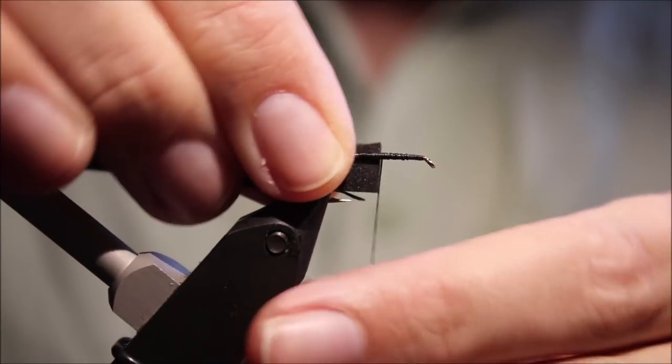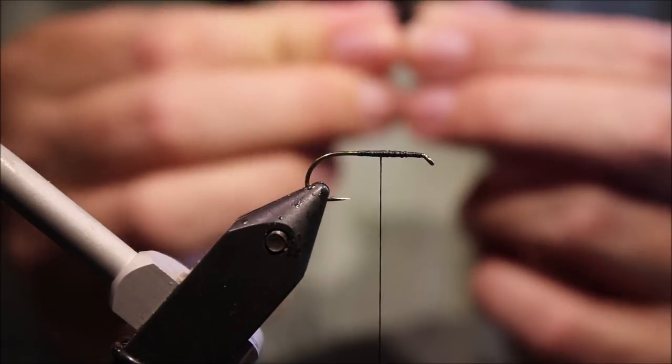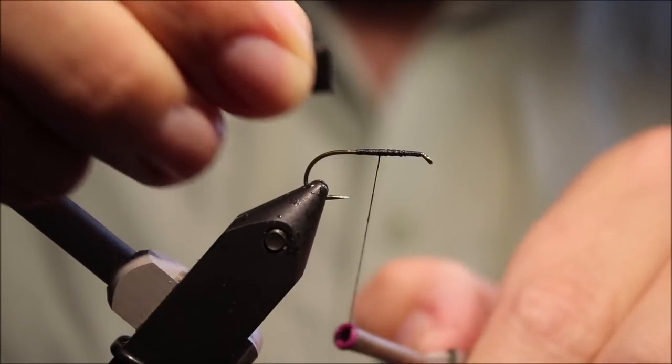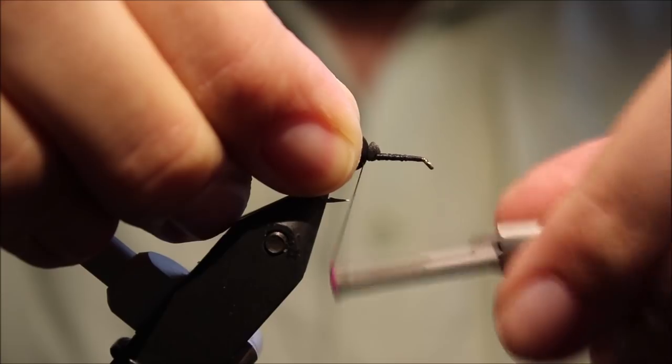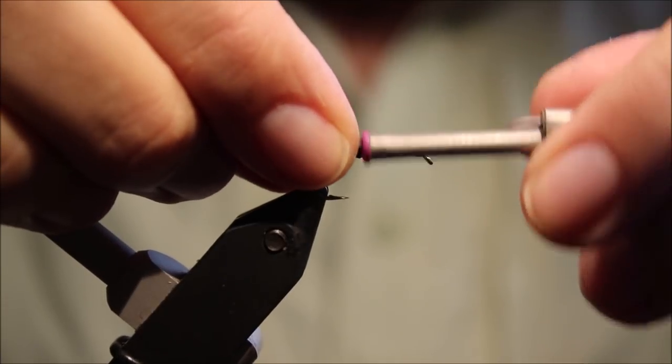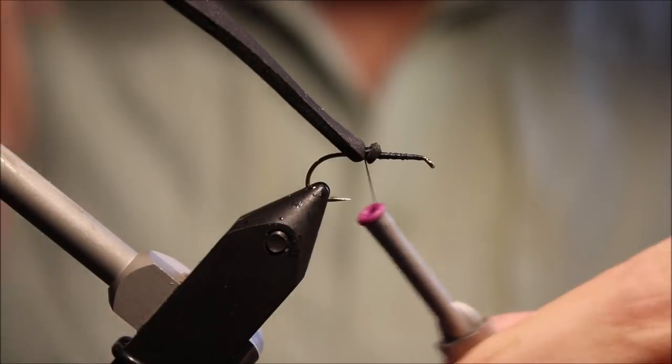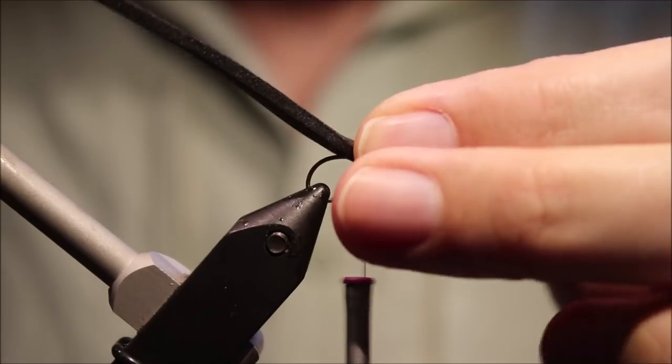I'm going to take some black foam, I've got this roughly the hook gape, and I'm going to offer it in, catch that in there and tie back until the foam's just covering the thread wraps, so we're just nearly at the hook point there.